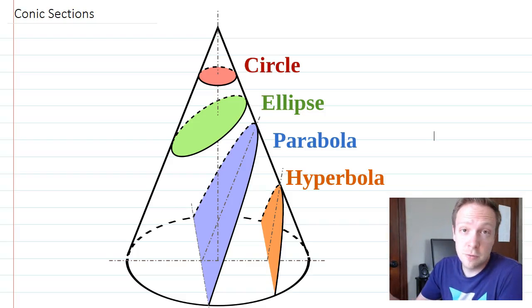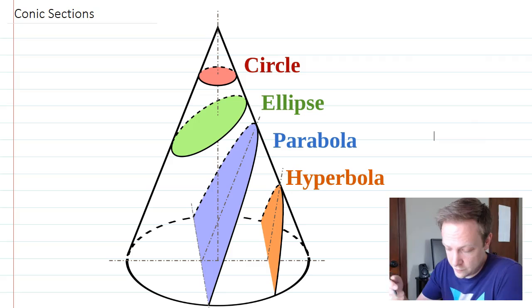This is going to be a quick video explaining what conic sections are. If you see here, here they are: circle, ellipse, parabola, and hyperbola. And then there are some weird ones that end up being straight lines or x's, but these are the main four.